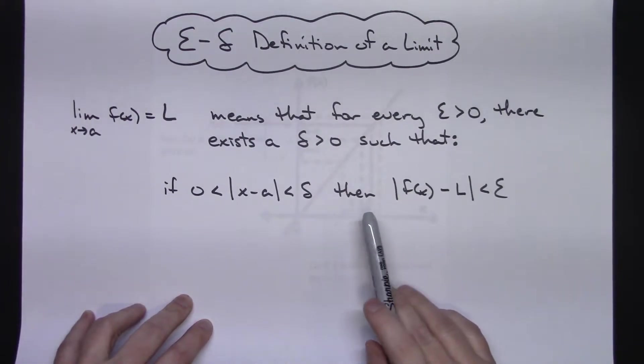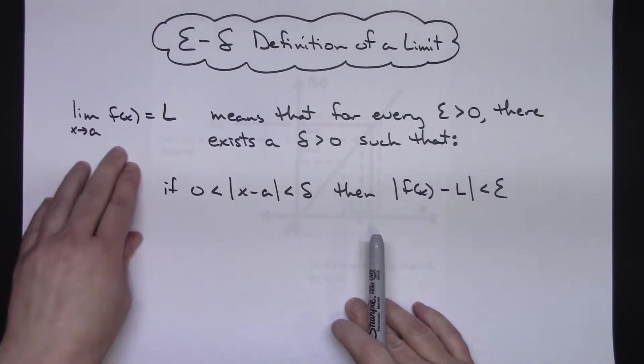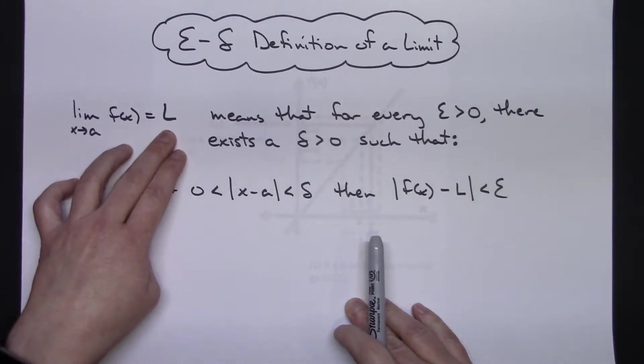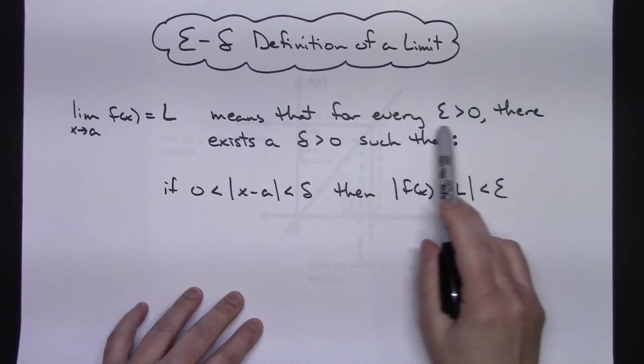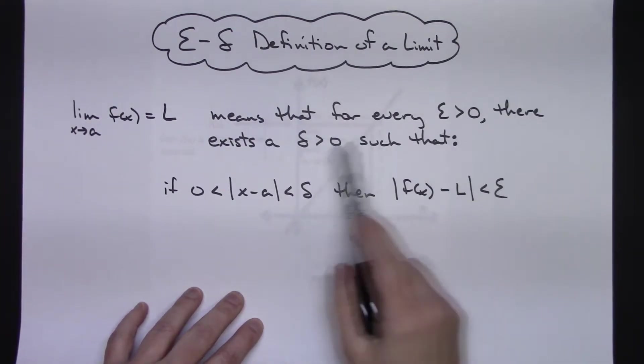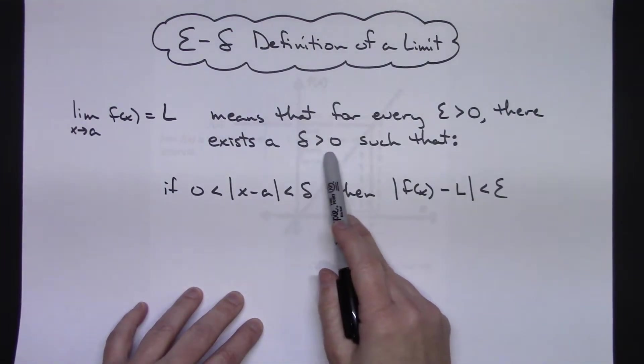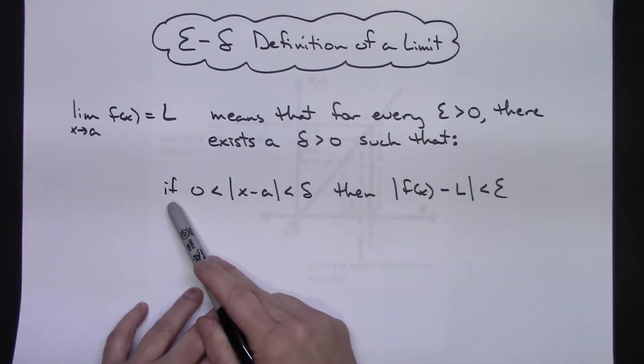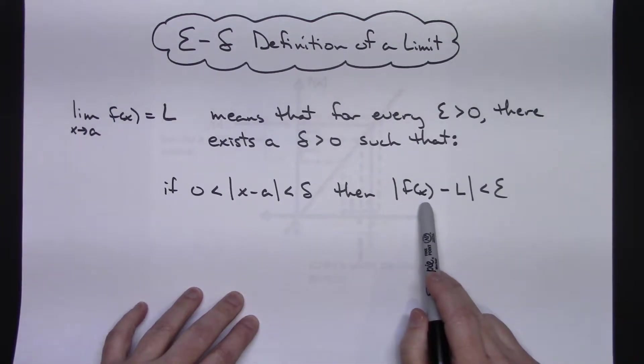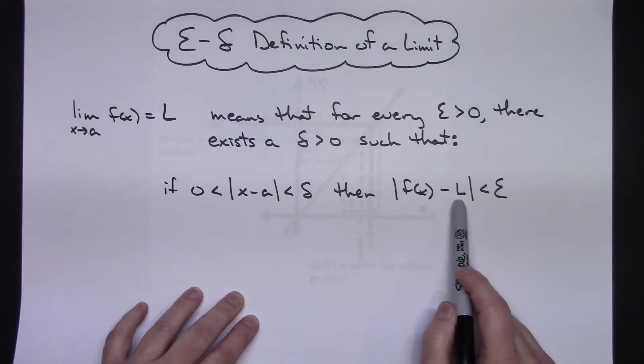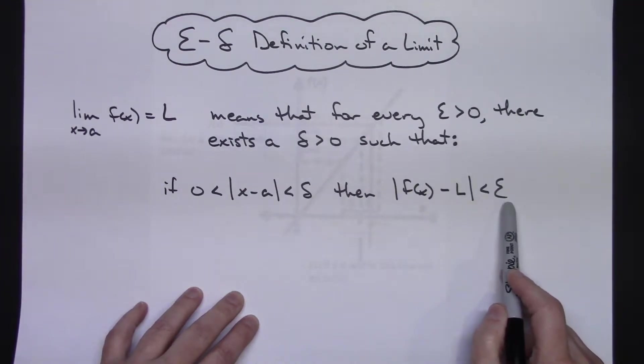First of all, I would like to take a look at what that epsilon-delta definition of a limit says. It states that the limit as x approaches a of f of x is equal to L. This symbol means that for every epsilon greater than zero, there exists a delta greater than zero such that if the absolute value of x minus a is in between zero and delta, then the absolute value of f of x minus the limit is less than epsilon.